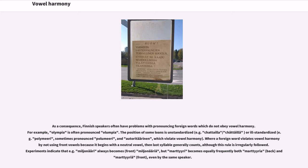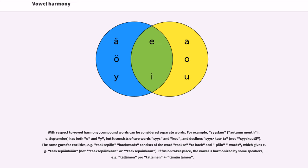As a consequence, Finnish speakers often have problems pronouncing foreign words which do not obey vowel harmony. For example, Olympia is often pronounced as Olympia. The position of some loans is unstandardized. Where a foreign word violates vowel harmony by not using front vowels because it begins with a neutral vowel, the last syllable generally counts, although this rule is irregularly followed. Experiments indicate that miljonääri always becomes miljonääriä, but metros becomes equally frequently both metrossa and metrossa, even by the same speaker. With respect to vowel harmony, compound words can be considered separate words.